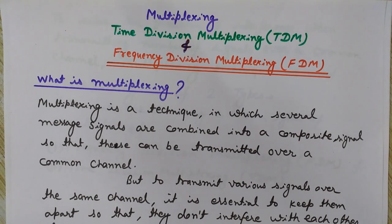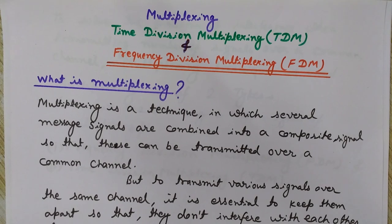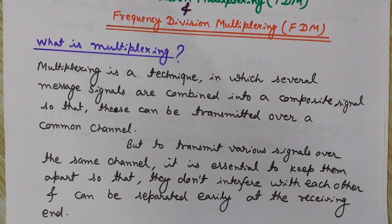Whenever many users want to send their signals on a common channel, we can combine these signals into one composite signal. We use multiplexing to avoid interference while transmitting them simultaneously. To transmit various signals over the same channel, it is essential to keep them apart so they don't interfere and can be separated easily at the receiving end.